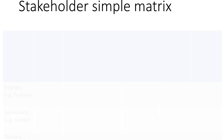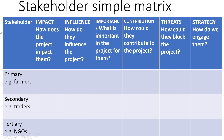Now let us see a simple stakeholder matrix. There it is — a simple matrix with seven columns and about four rows. The first column lists stakeholders: primary stakeholders, for example, are those who directly benefit from a project, such as farmers. Secondary stakeholders are those who indirectly benefit, such as traders who benefit from the outputs. Tertiary stakeholders include non-government organizations. For each stakeholder we have to analyze the impact — how does the project impact them?